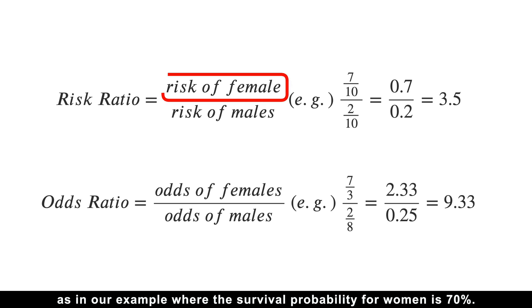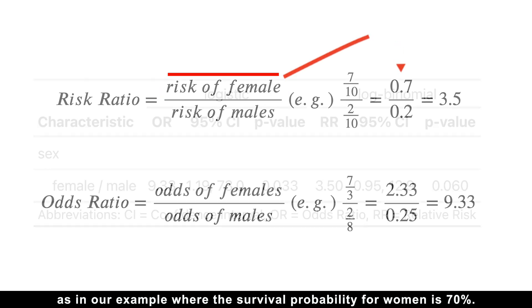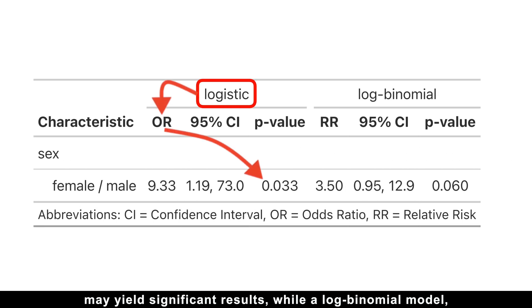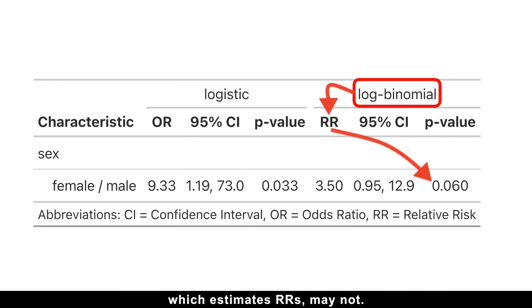as in our example where survival probability of women is 70%. This also explains why logistic regression, which measures odds ratios, may yield significant results, while a log-binomial model, which estimates risk ratios may not.